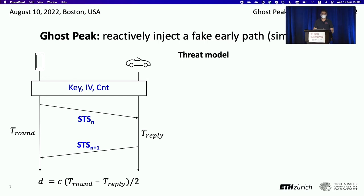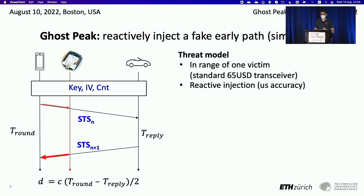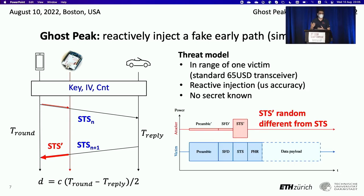In our attack, we try to break this system at the physical layer. We have an attacker which is a standard, cheap device in range of one of the devices. This attacker reactively injects packets on top of the legitimate transmission. This does not require high accuracy — microsecond accuracy is totally acceptable. Our attacker has no idea about the cryptographic secrets, so it transmits a different STS which is randomly different from the legitimate one. The attacker also plays with the power levels of each field in order to maximize the effect of this wrong STS while not causing jamming.